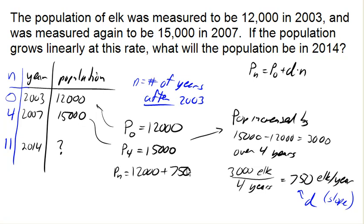And now I can make my prediction. My number of elk after 11 years will be 12,000 plus 750 times 11, which I can calculate out to be 20,250 elk in 2014.